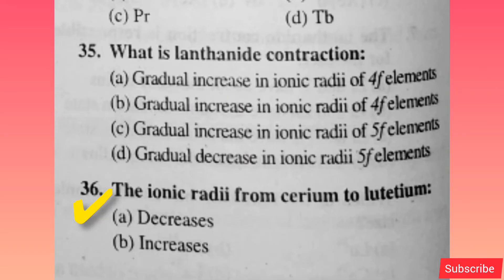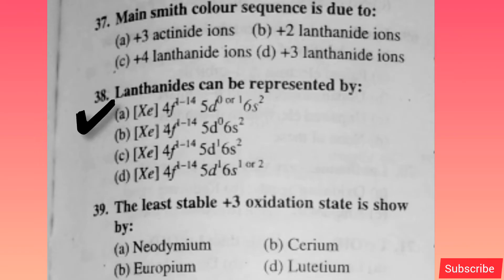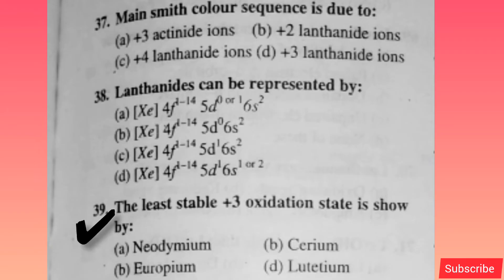Lanthanide contraction: there is a gradual decrease — instead of increase, there is a decrease — in the ionic radii from cerium to lutetium. Option A is correct. The main color sequence is due to — option D is correct. Lanthanides can be represented by — option A is correct. The least stable plus 3 oxidation state is shown by — option B is correct.